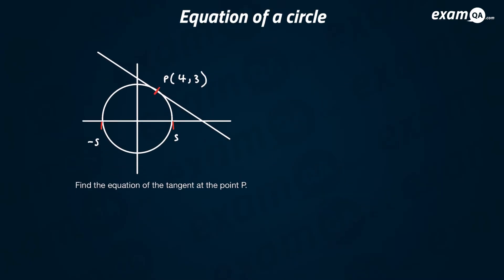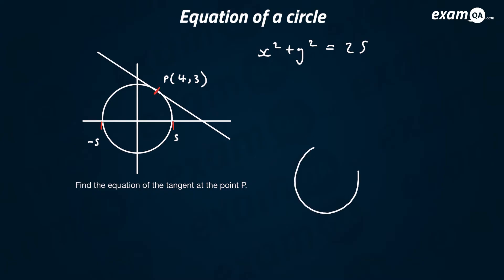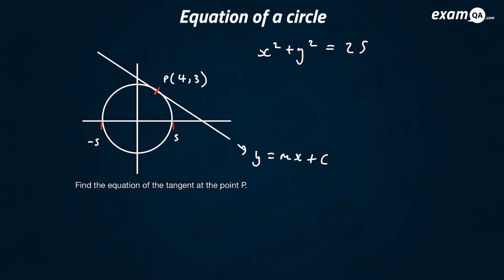The actual questions they'll give you would look like this. They show you an equation of a circle. Just before we think about the tangent, what is the equation of this circle? The radius is 5, so the equation would be x squared plus y squared equals 25. They're saying this circle has a tangent at P — a tangent is just a line that touches the circle once. Can we work out the equation of the tangent? We need y equals mx plus c, so we need to find m and c.